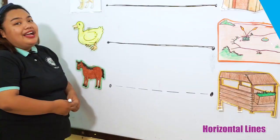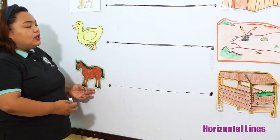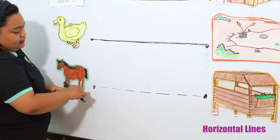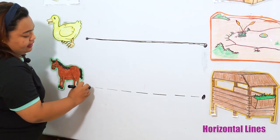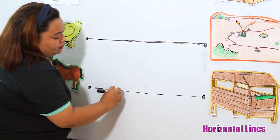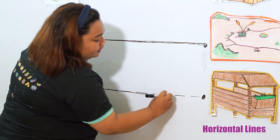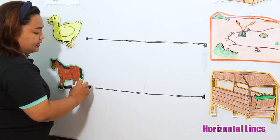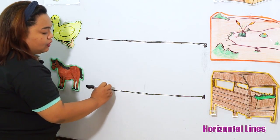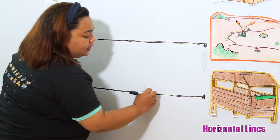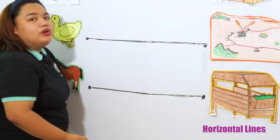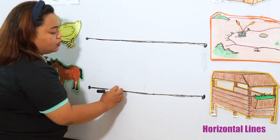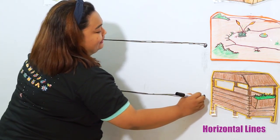And last, let's help the horse find its home. Left, going right. Another one, left, going right. Once more, left, going right.